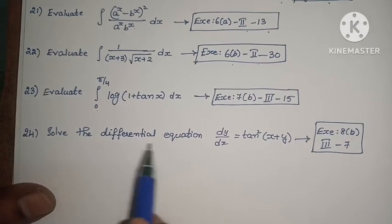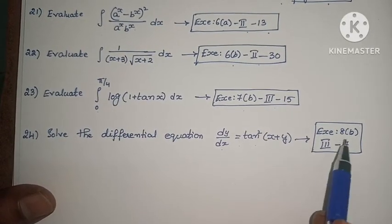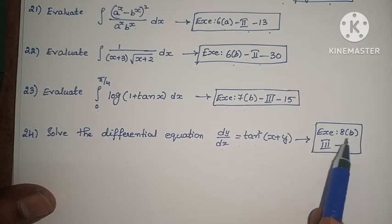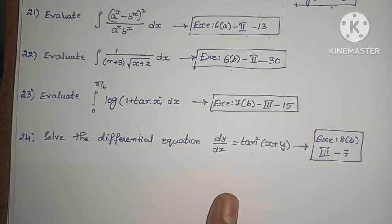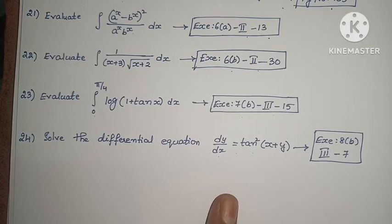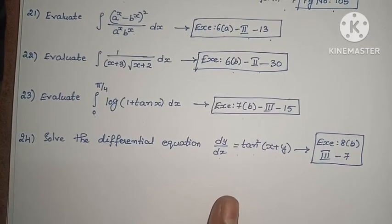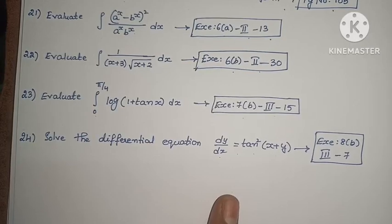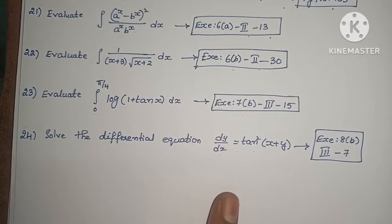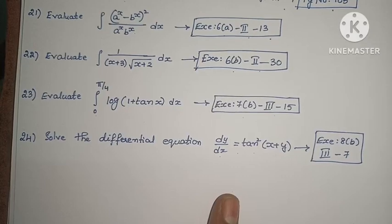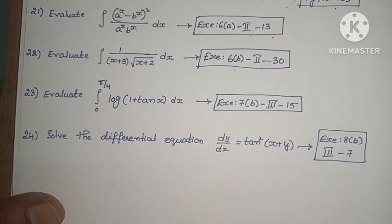Next: solve the differential equation dy/dx = tan²(x + y). This is question 8, third exercise, third problem — 7th one. So, model paper 4 is complete. These are all important problems. Please try these problems, and if you want help, explain in the comments box. If you like this video, please like and subscribe to my channel. Thank you.